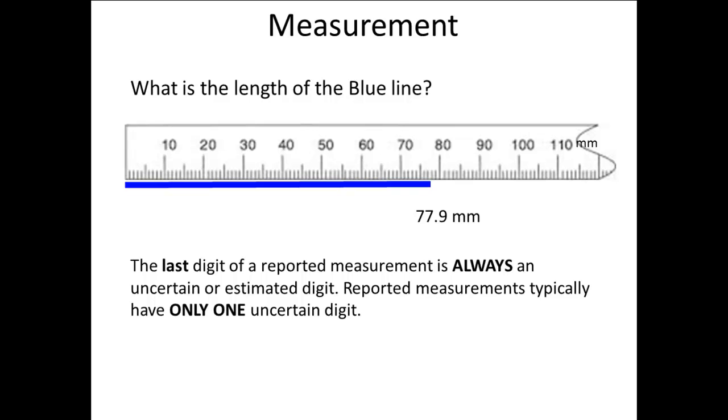This is what we were talking about earlier when we talked about how good our instrument is. The concept we are talking about here is precision. The better our instrument is, the more digits we can get in our measurement. And the precision of our measurement is related to the number of digits we can report. So, the more digits in our number, the more precise our measurement.